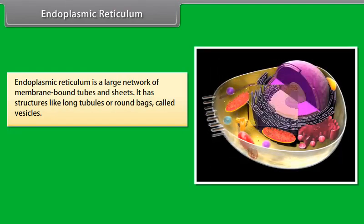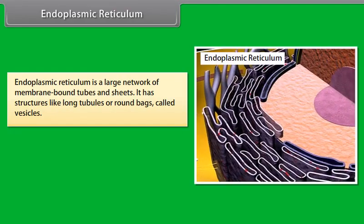Endoplasmic reticulum is a large network of membrane-bound tubes and sheets. It has structures like long tubules or round sacs called vesicles. On the basis of the presence of ribosomes, they are of two types: rough endoplasmic reticulum (RER) and smooth endoplasmic reticulum (SER).